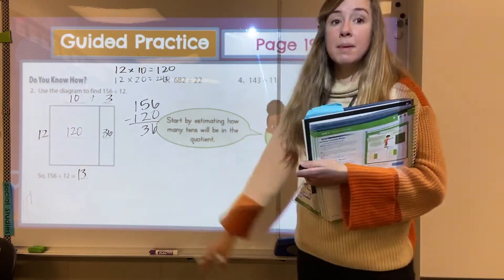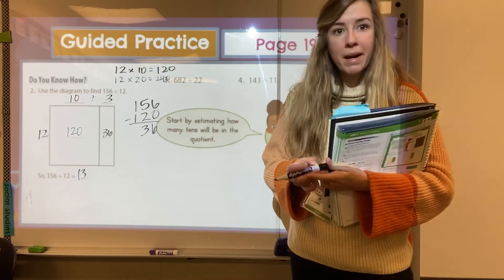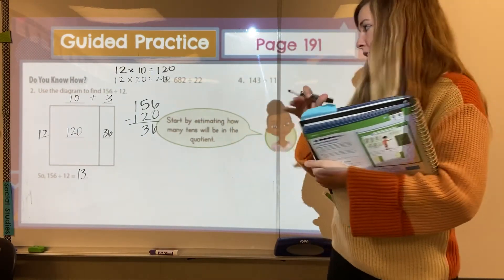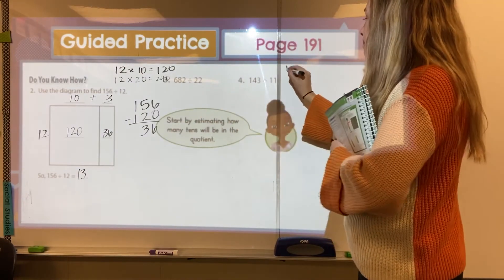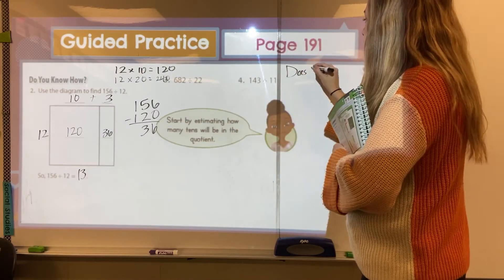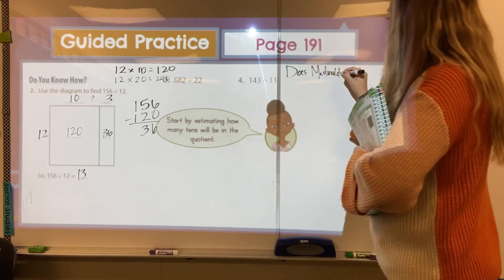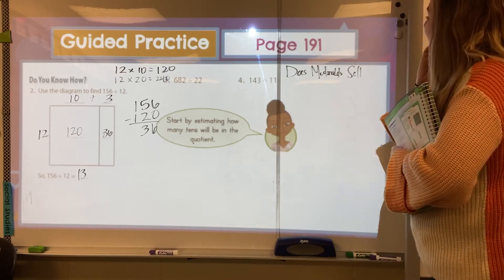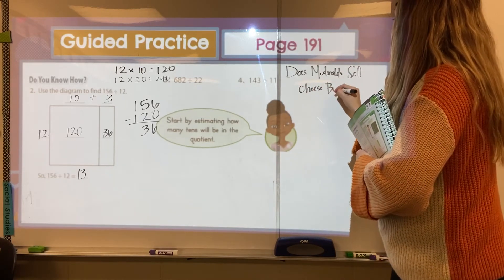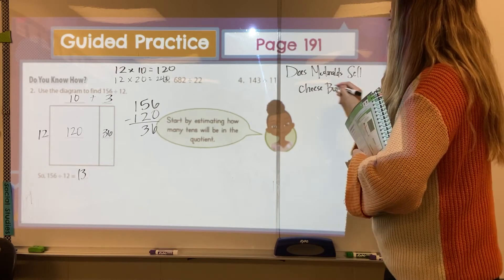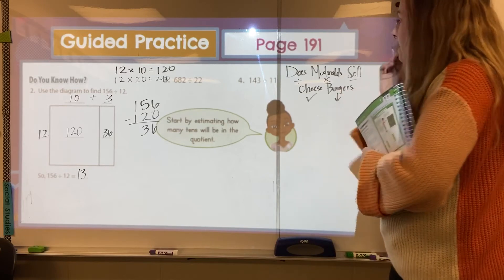However, I think this can be kind of confusing working backwards a little bit. I am, I understand it, but my brain is working more with that standard algorithm. So I'm going to model another one of those. So for number three, remember we're doing our does McDonald's sell cheese burgers, divide, multiply, subtract, check, bring down.